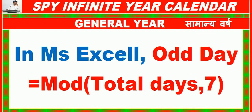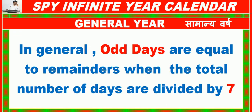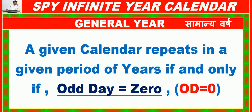In MS Excel, odd days = MOD(total days, 7). In general, odd days are equal to the remainder when the total number of days is divided by 7. A given calendar repeats in a given period of years if and only if odd days equal zero.